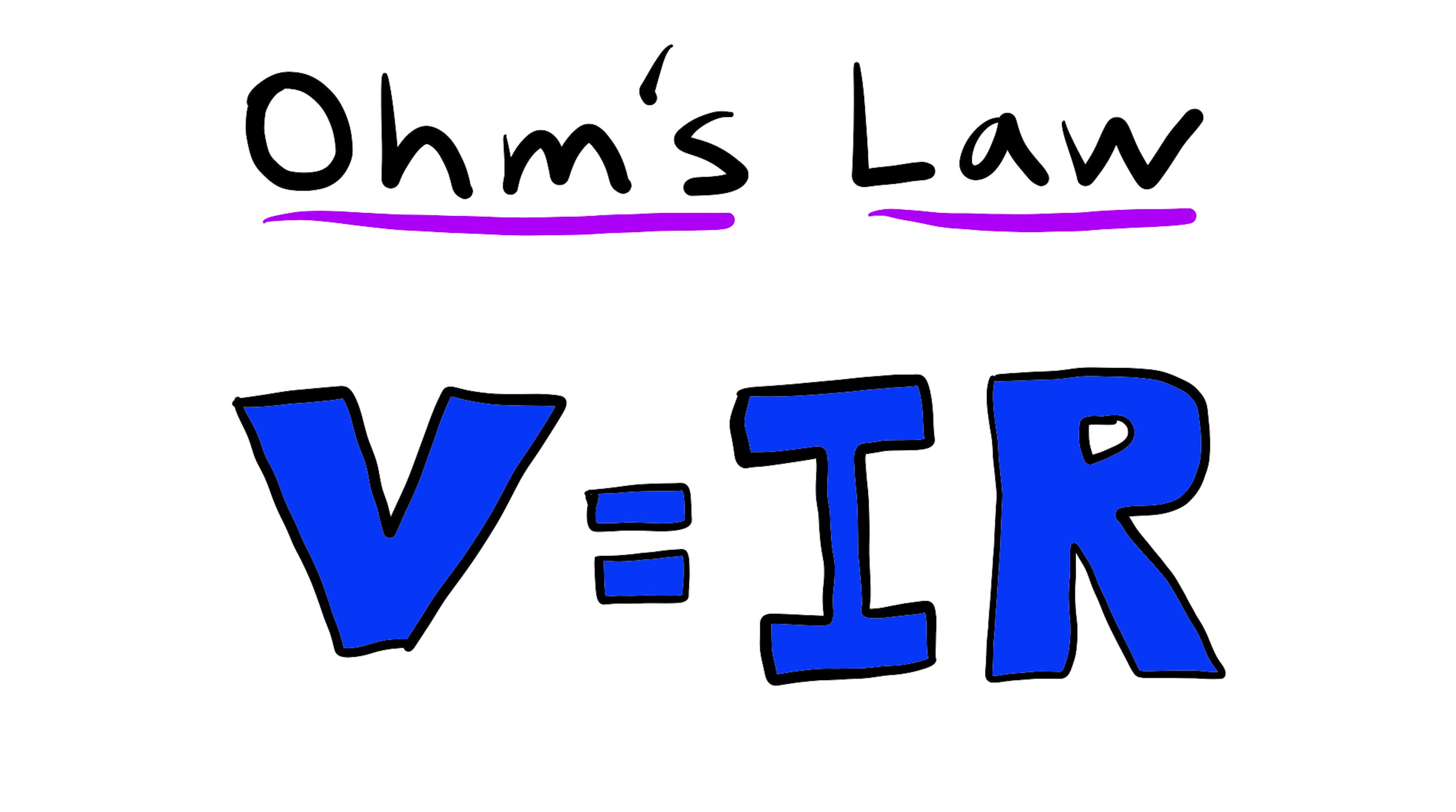You might be wondering why I didn't pick easier values to work with for this example. I could have picked 5 volts and 5 ohms to end up with one amp. Easy. But I picked these very specific values because I have a very specific real world scenario I want to show you that'll help you understand how this math stuff applies in real life.